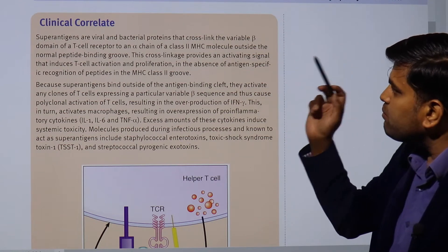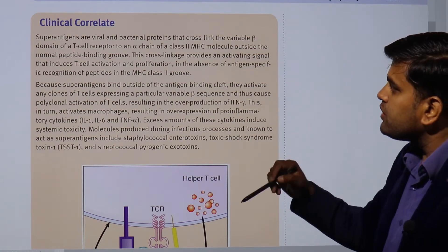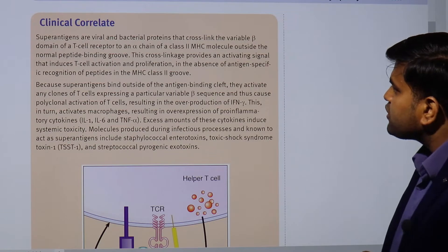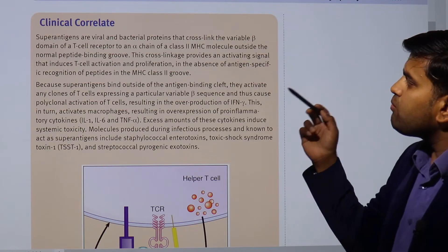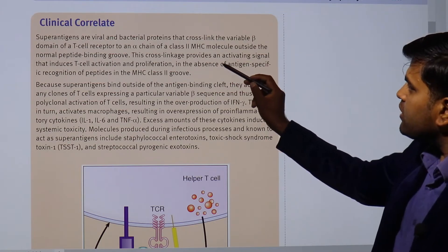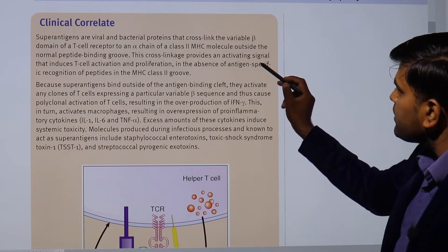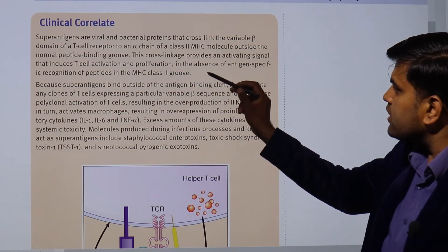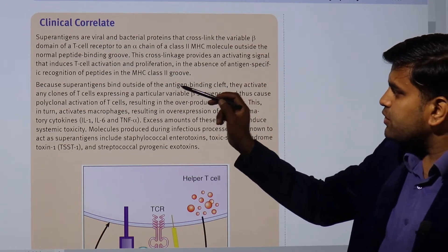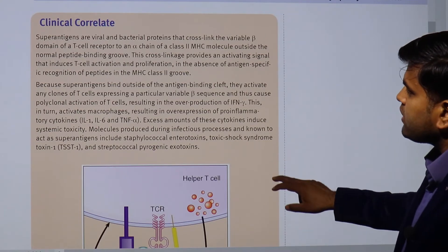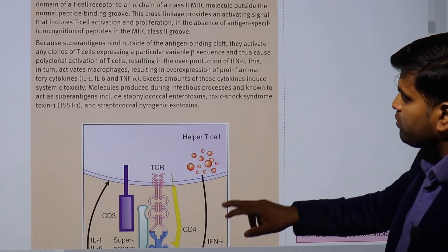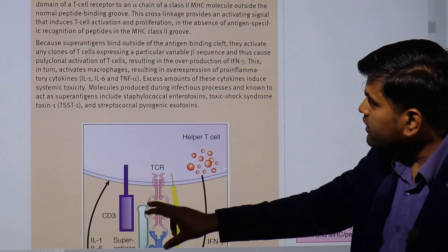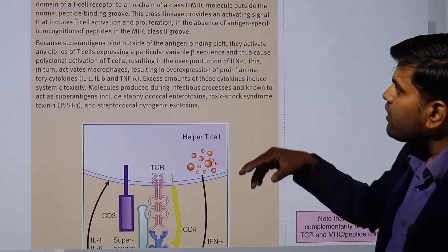Superantigens are proteins that cross-link with the variable beta domain of the T-cell receptor to the alpha chain of the MHC class 2 molecule, outside the normal peptide binding groove. This cross-link provides an activating signal that induces T-cell activation and proliferation in the absence of antigen-specific recognition of the peptide in the MHC class 2 groove.